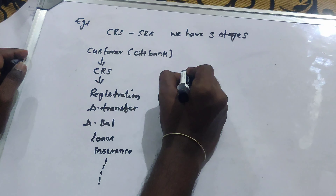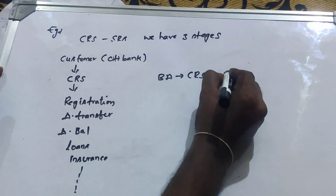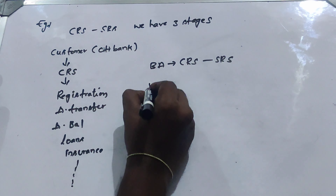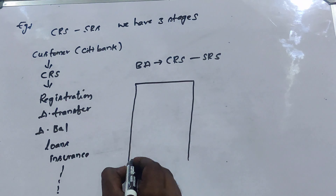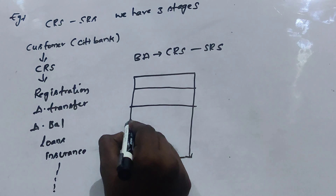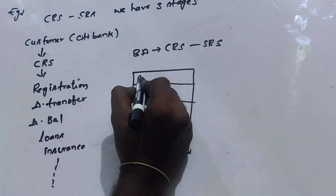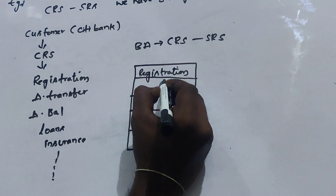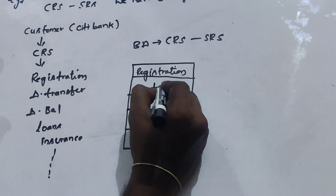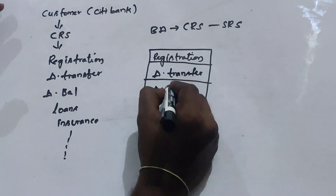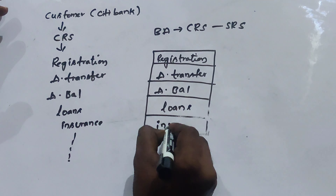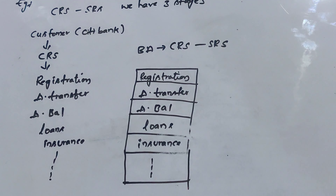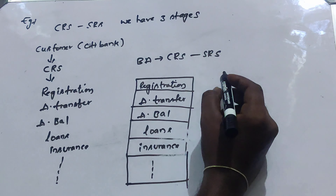Now what the BA will do is convert the CRS to SRS — that means software language. The CRS features include registration, amount transfer, amount balance, and insurance, and so on. Now we are going to see how the BA converts that CRS to SRS.